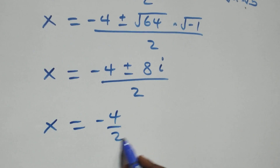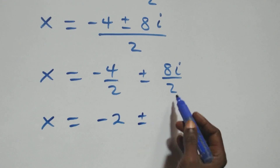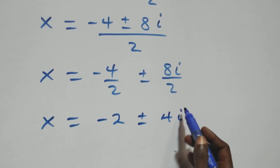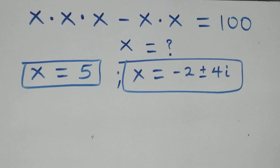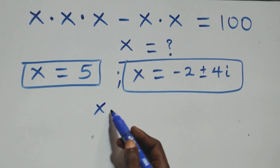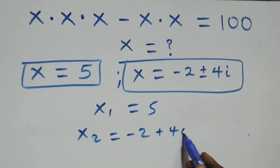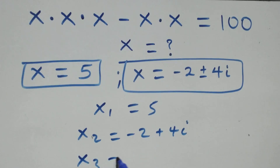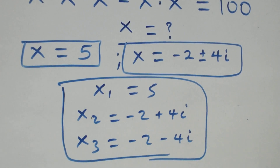So x equals minus 4 over 2 plus or minus 8i over 2, which becomes x equals minus 2 plus or minus 4i. These are two complex solutions. Therefore, in this problem we have three solutions total: x₁ equals 5, x₂ equals minus 2 plus 4i, and x₃ equals minus 2 minus 4i — one real solution and two complex solutions.